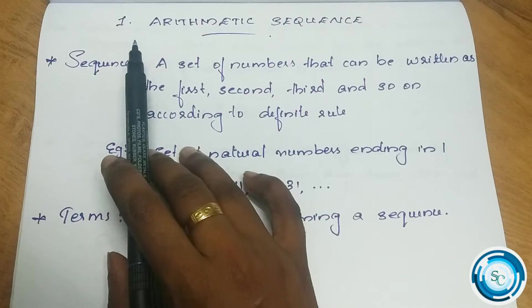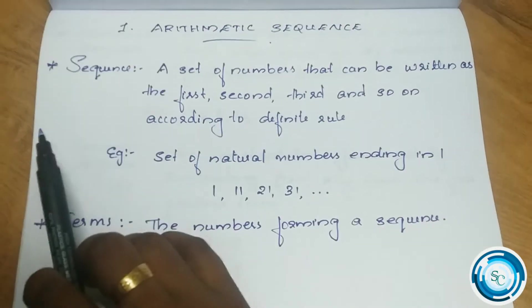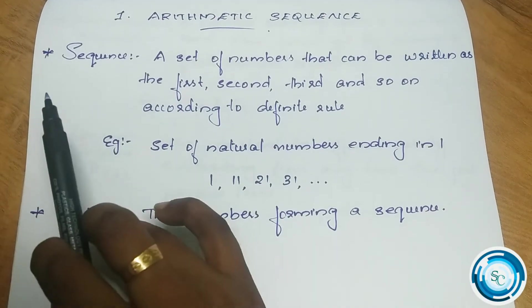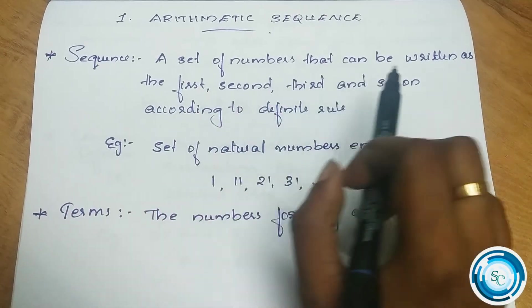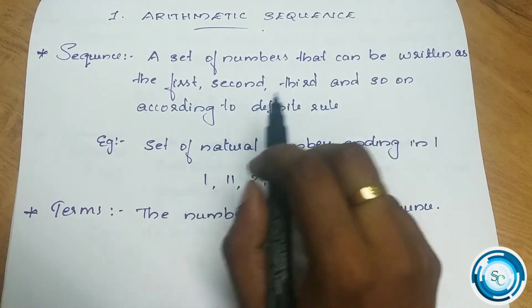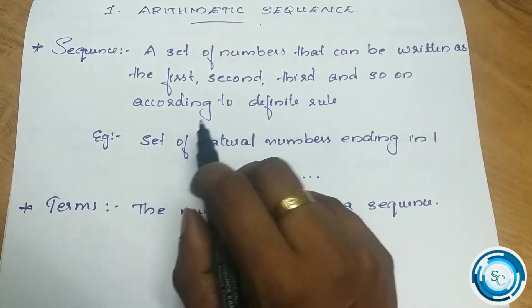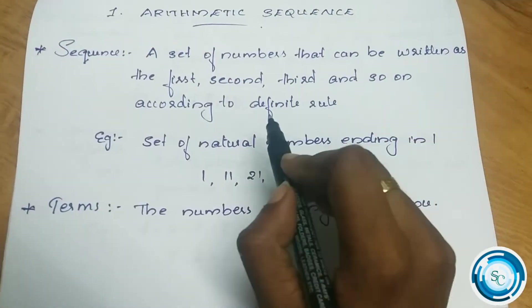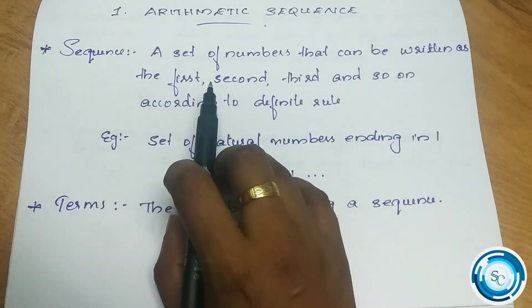Chapter 1: Arithmetic Sequence. The first topic is Sequence. A sequence is a set of numbers that can be written as the first, second, third and so on according to a definite rule.